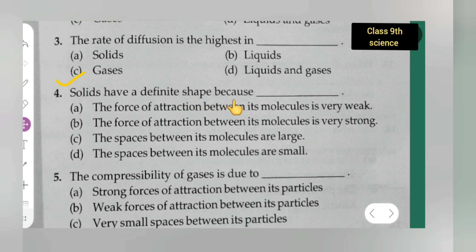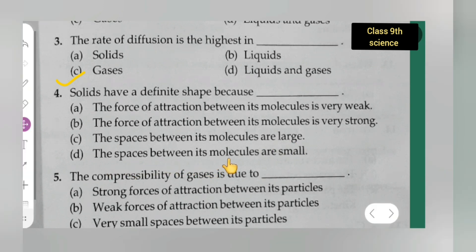Question 4: Solids have a definite shape because the forces of attraction between their molecules are very strong. Option A is very weak forces, option B is very strong forces of attraction, option C is large spaces, option D is small spaces. The correct answer is option B — the forces of attraction between its molecules are very strong.